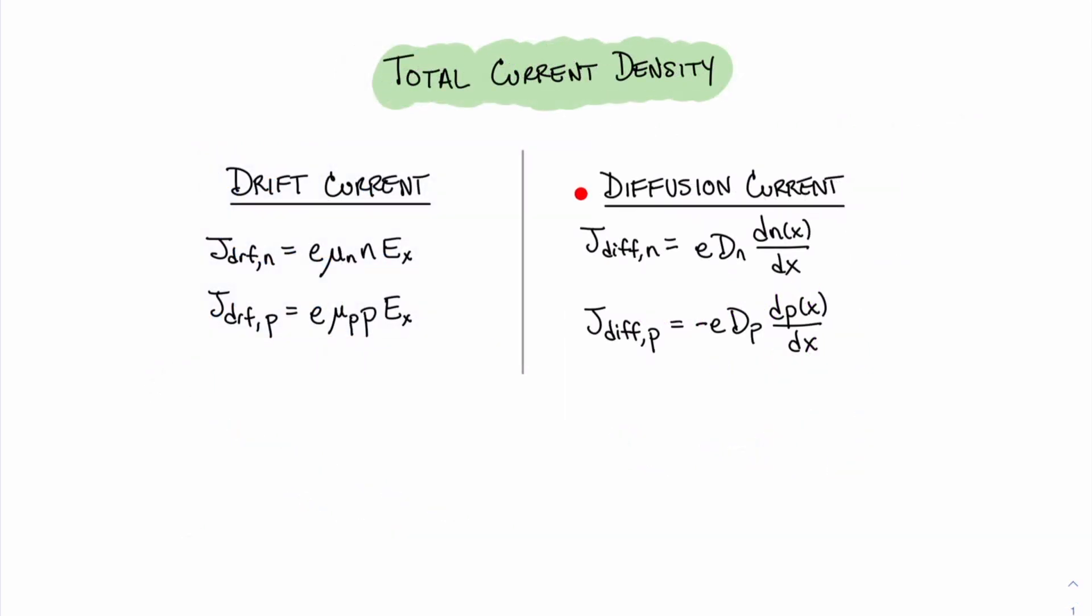Now that we've derived an equation for diffusion current density, we can move our attention to the concept of total current density. As a reminder, we have two types of current: drift current and diffusion current. Drift current is caused by the presence of an electric field in the device, whereas diffusion is caused by a spatial difference or a non-uniform distribution of carriers. It should be no surprise then that the total current density is the combination of drift current and diffusion current densities.